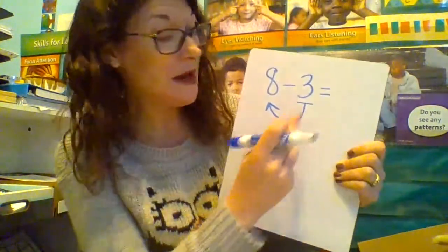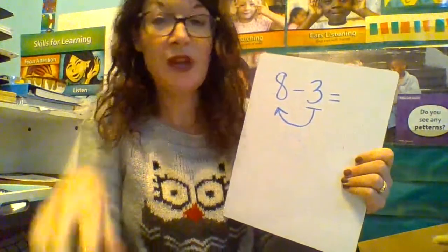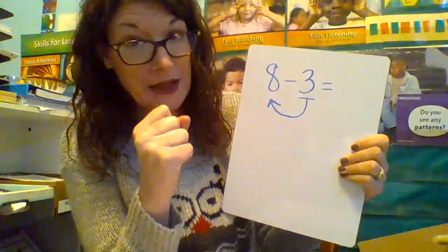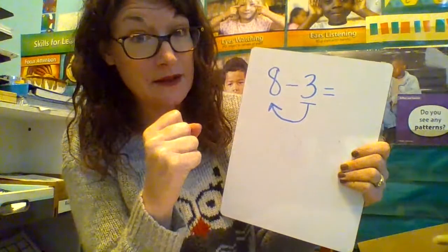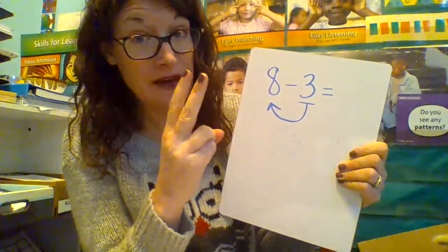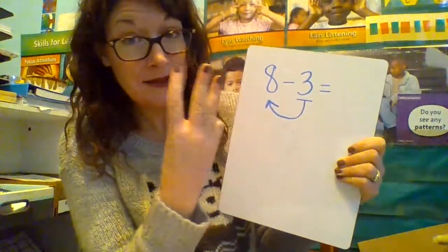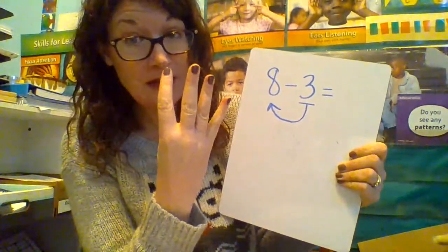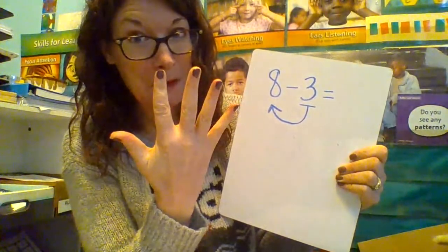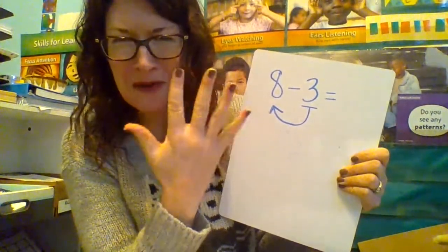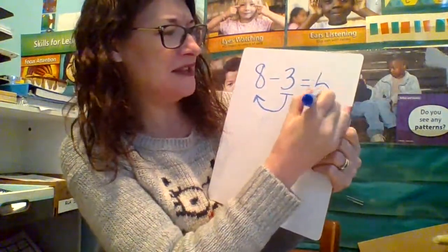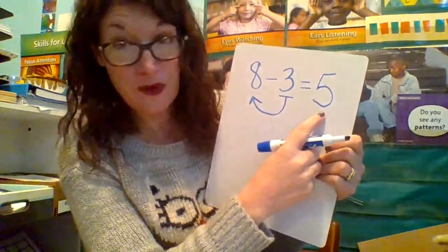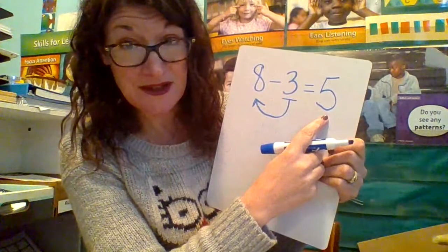Let's do this one together. Let's grab the 3 — ready? 3. And we're going to count on until we get to 8. 4, 5, 6, 7, 8. What did we end up with? That's right — 5. I always know when my fingers are all the way out on one hand, it's 5. So 5 would be my difference in this case.